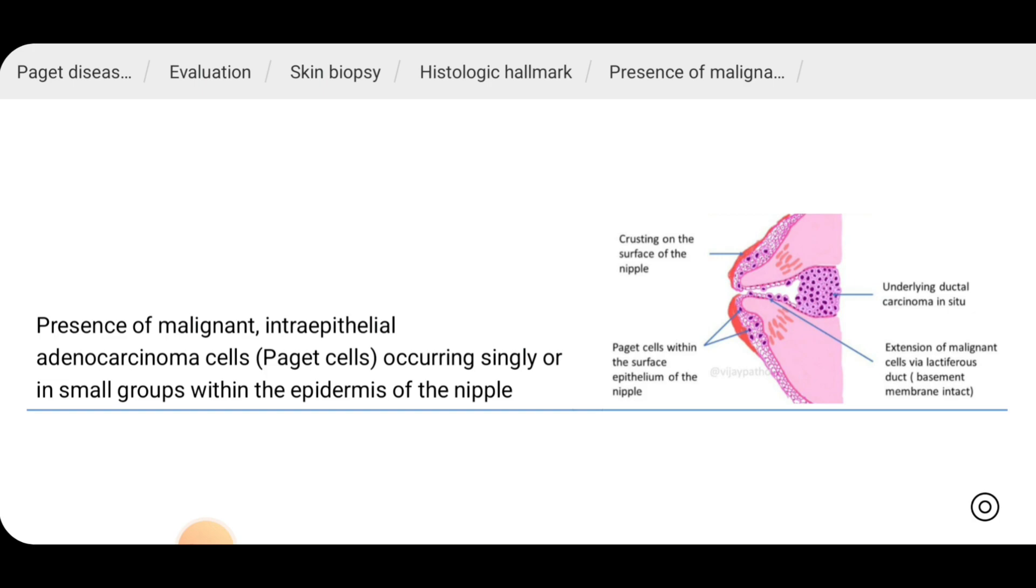As shown in this picture, there is an underlying ductal carcinoma in situ. And in the epidermis, you can see Paget cells within the surface epithelium of the nipple and erupting on the surface of the nipple.